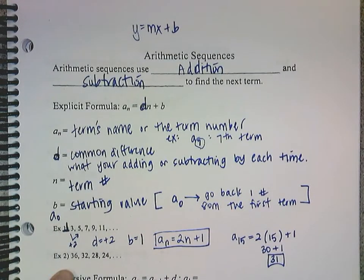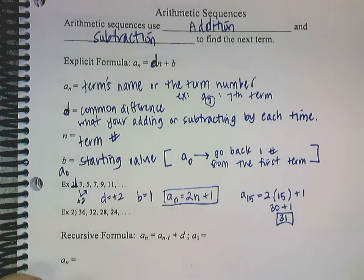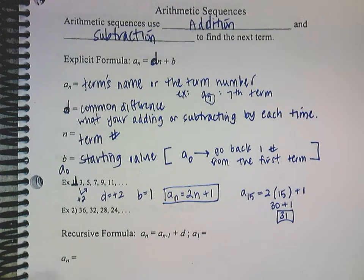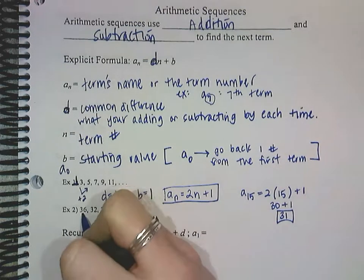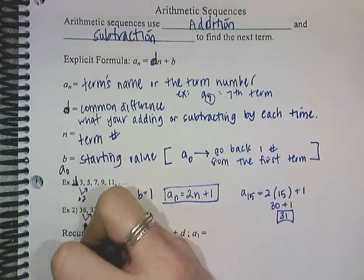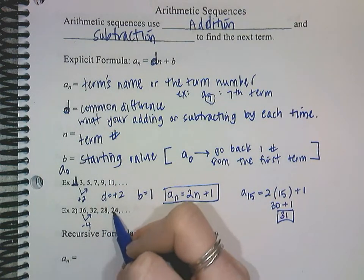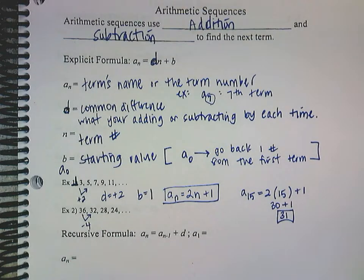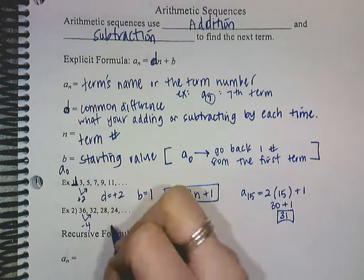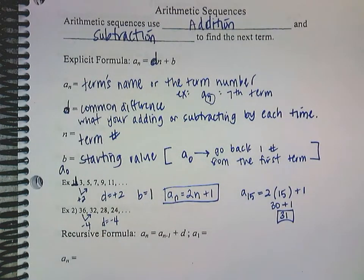Now we're going to do the same thing on number 2. We are going to figure out what's happening every time, so the common difference. And we need to figure out our beginning or our starting value. Okay, so to go from 36 to 32, we are subtracting 4 every time. So then 32 minus 4 is 28. 28 minus 4 is 24. So this pattern is correct, which means that it's arithmetic, because we're going down every time by the same number. So my d is equal to negative 4. That's how much I'm adding or subtracting by each time.